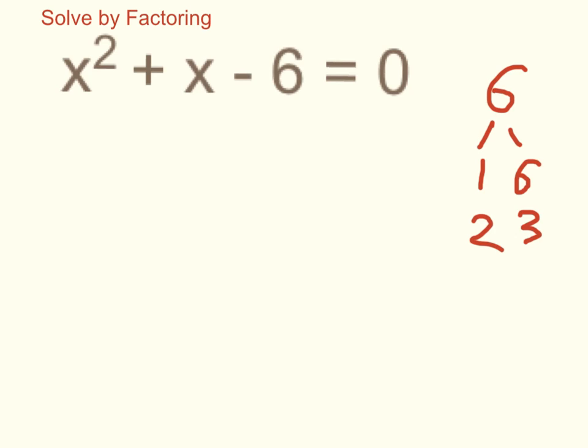If we just look at 6 itself, it can be factored in two ways, either as 1 times 6 or 2 times 3. This is going to be a negative 6, so that means one of those has to be negative. And remember, we want them to add up to a positive 1. Therefore, it's got to be this, a negative 2 and a positive 3.